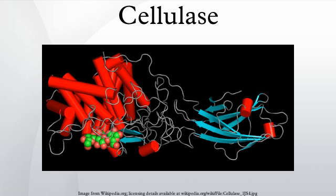There are five general types of cellulases based on the type of reaction catalyzed. Endocellulases randomly cleave internal bonds at amorphous sites that create new chain ends. Exocellulases, or cellobiohydrolases, cleave 2 to 4 units from the ends of the exposed chains produced by endocellulase, resulting in tetrasaccharides or disaccharides such as cellobiose. Exocellulases are further classified into type I, working processively from the reducing end, and type 2, from the non-reducing end.